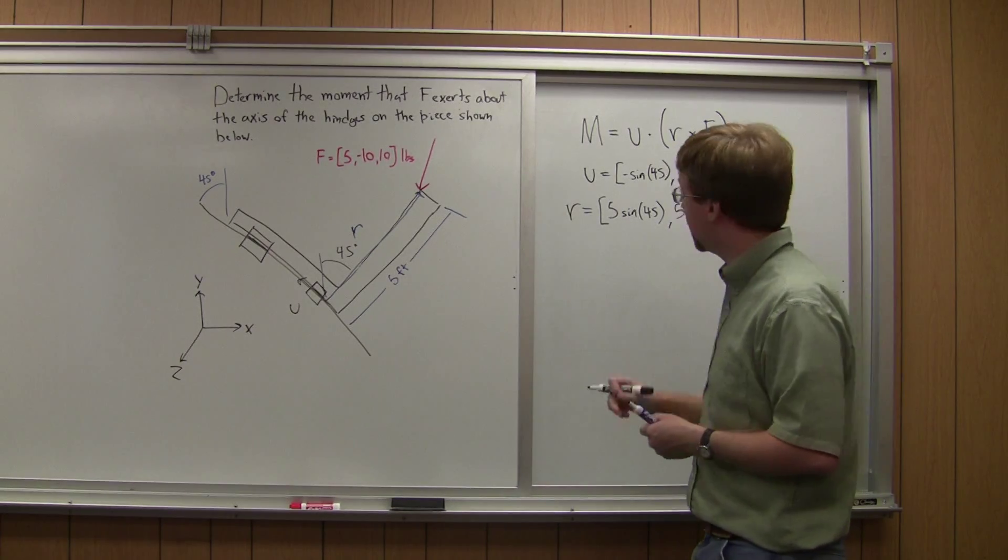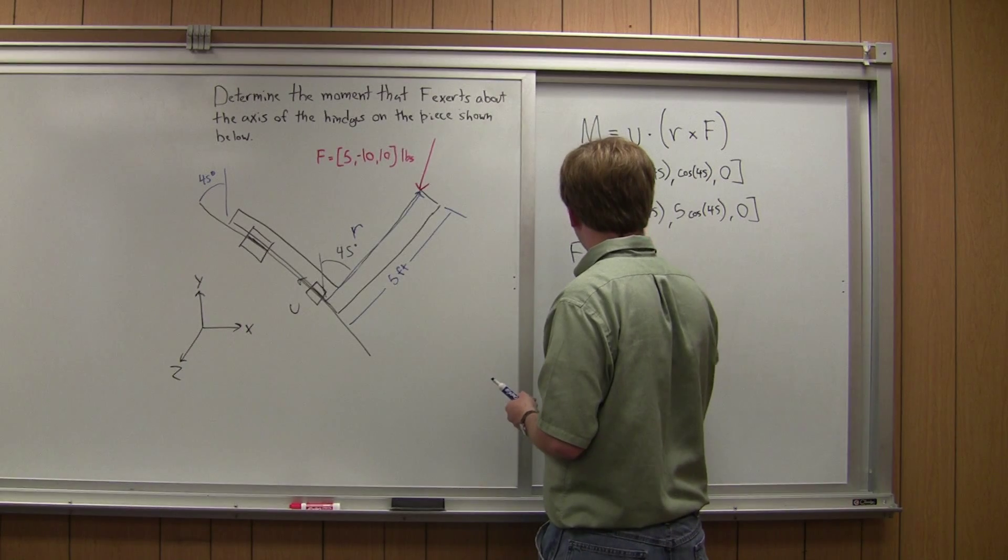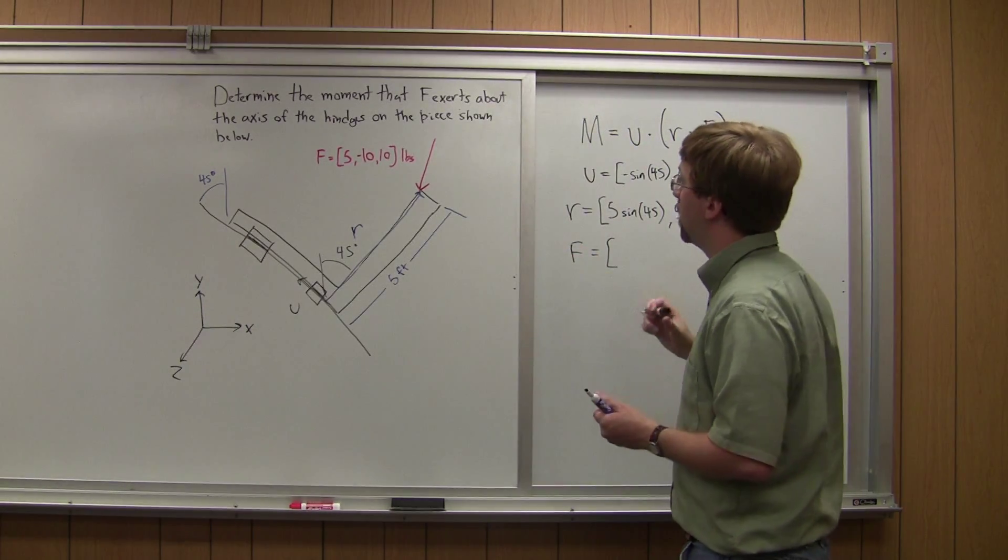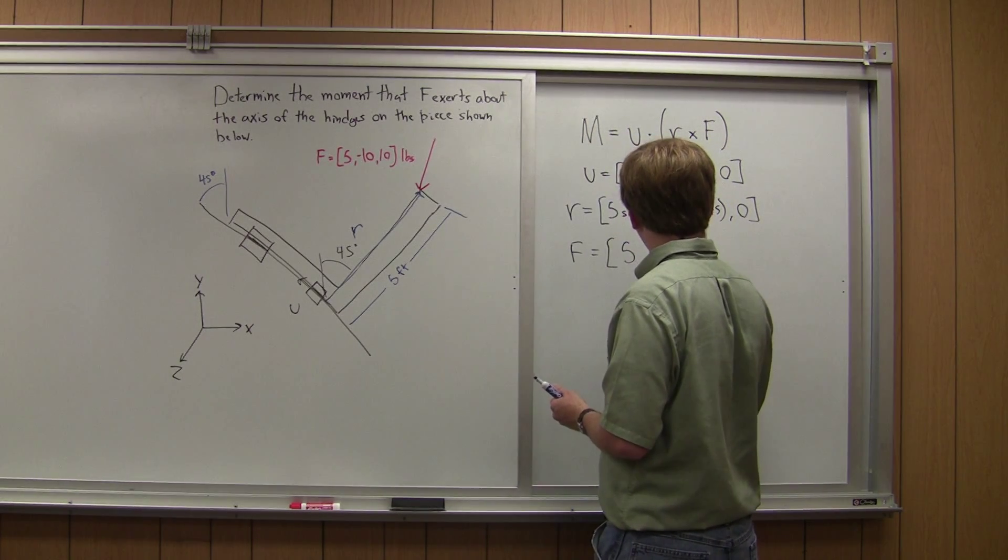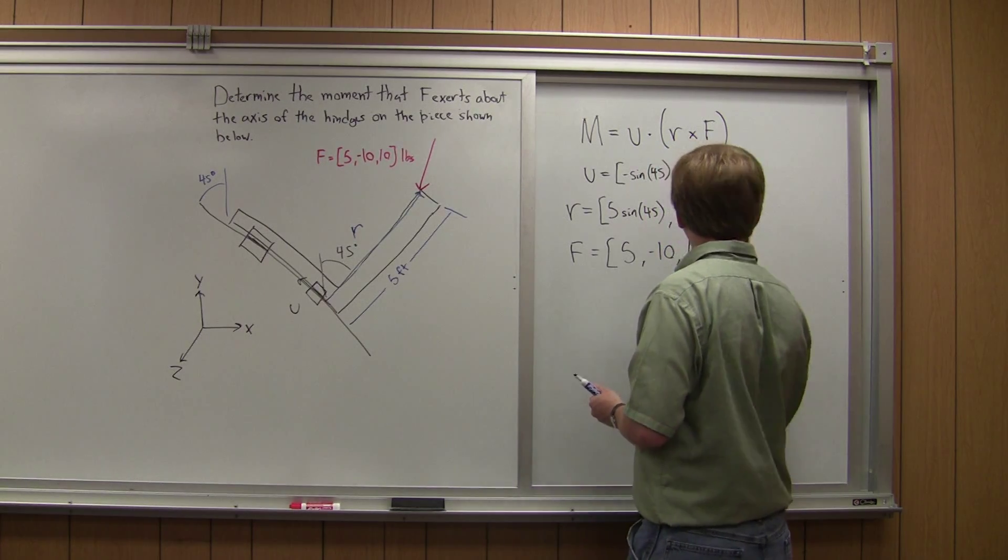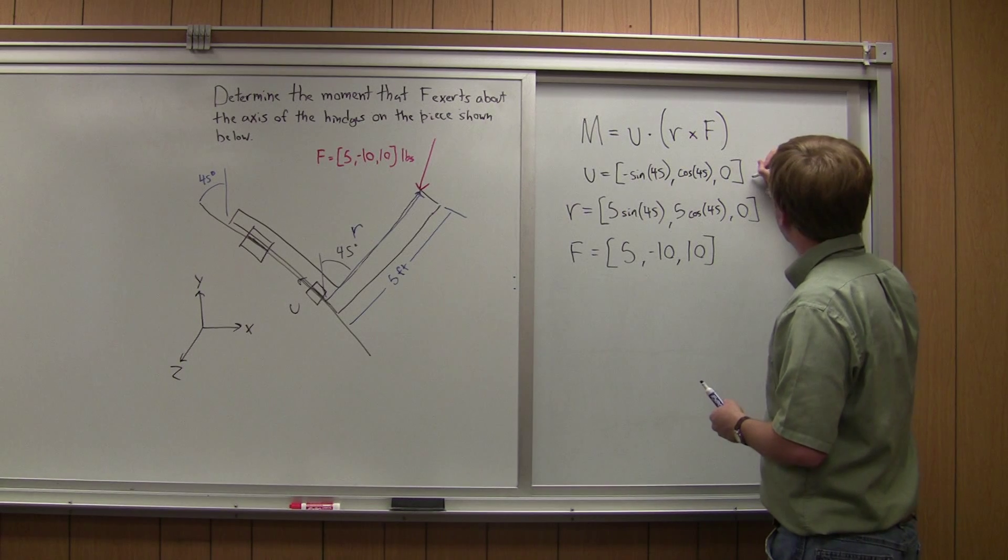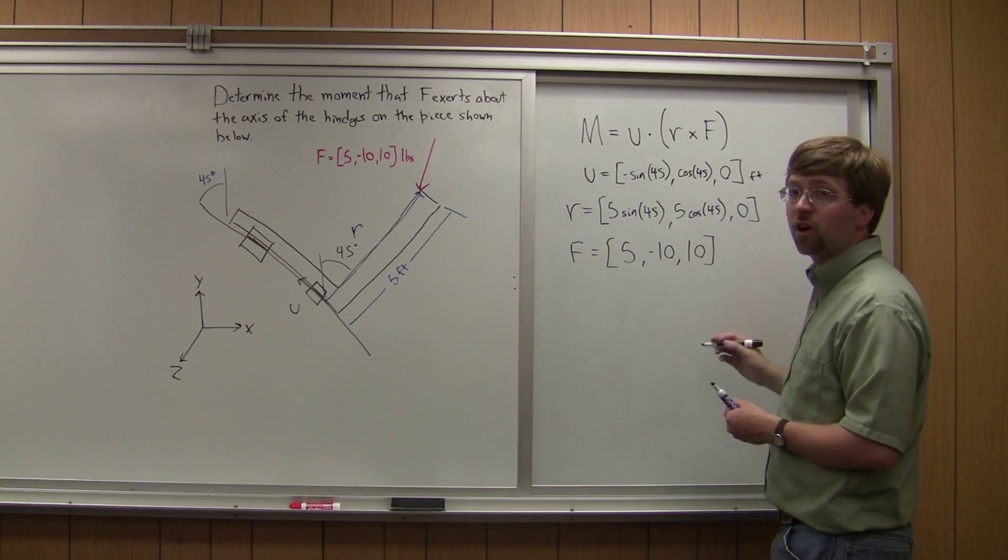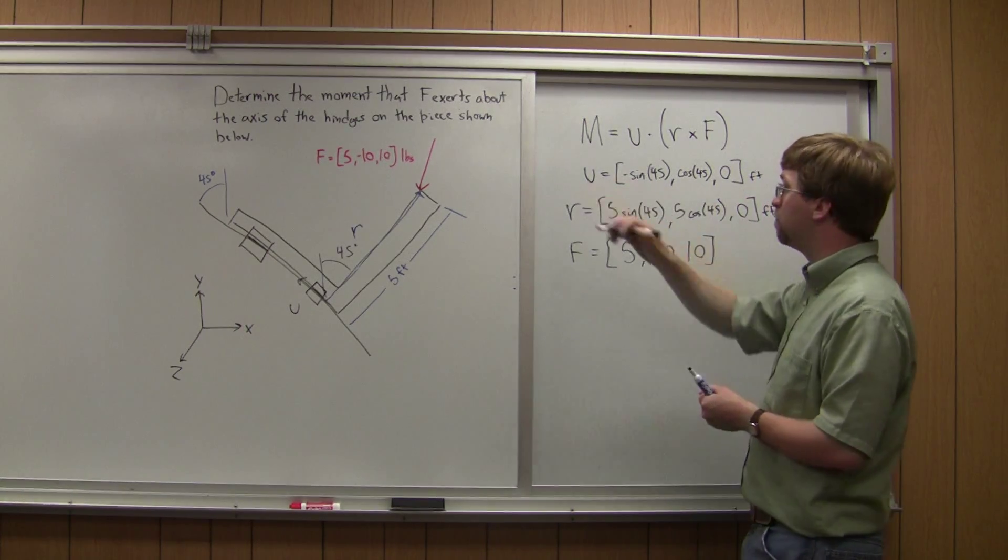And finally, our force vector is conveniently already given to us in component form. And that is 5, negative 10, positive 10. And so the units, the U vector is a distance, so this is going to be feet. The R vector is also a distance, that's going to be feet. And the force is in pounds.